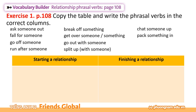Now let's learn some more phrasal verbs regarding relationships with the vocabulary builder on page 108. Exercise 1: copy the table and write the phrasal verbs in the correct columns. Chúng ta sẽ tìm hiểu thêm một số cụm động từ về các mối quan hệ bằng việc sắp xếp những cụm động từ này vào hai cột: một là 'starting a relationship' (bắt đầu một mối quan hệ), hai là 'finishing a relationship' (kết thúc một mối quan hệ).